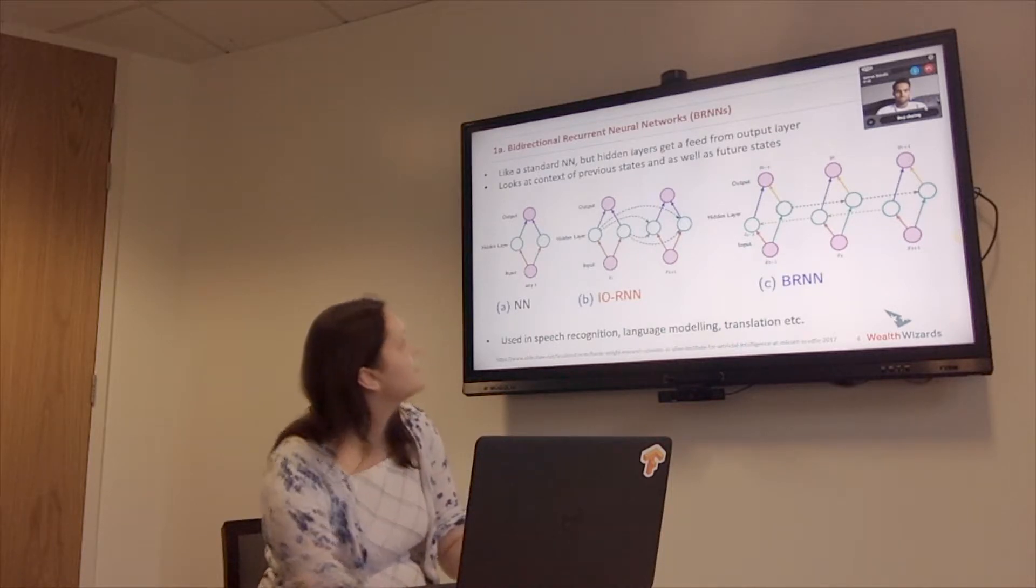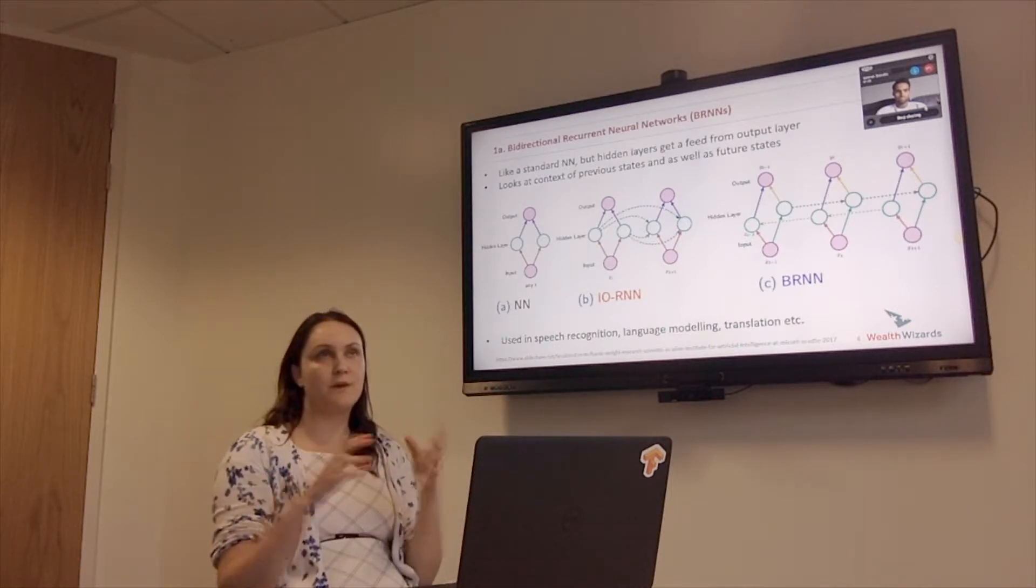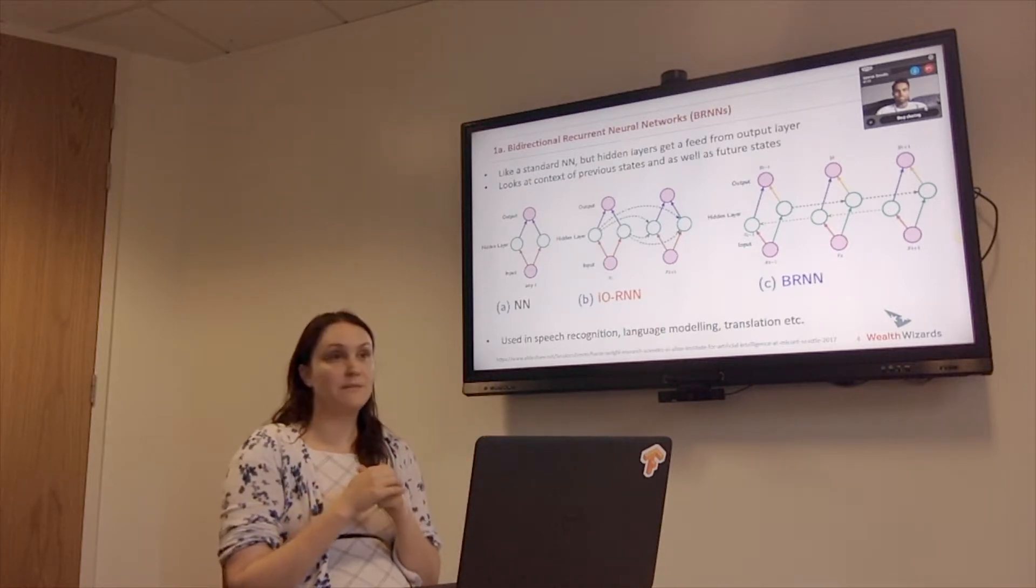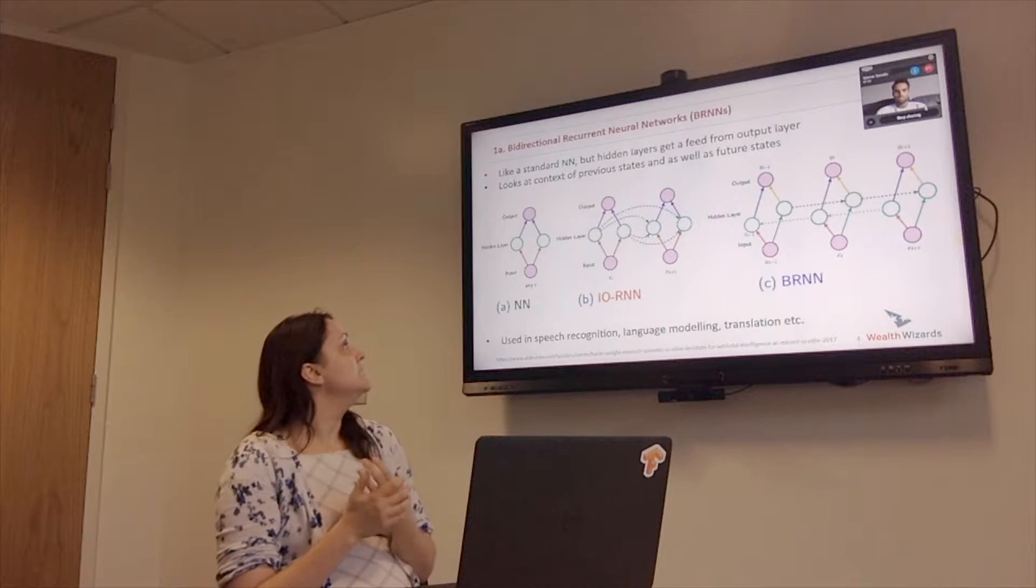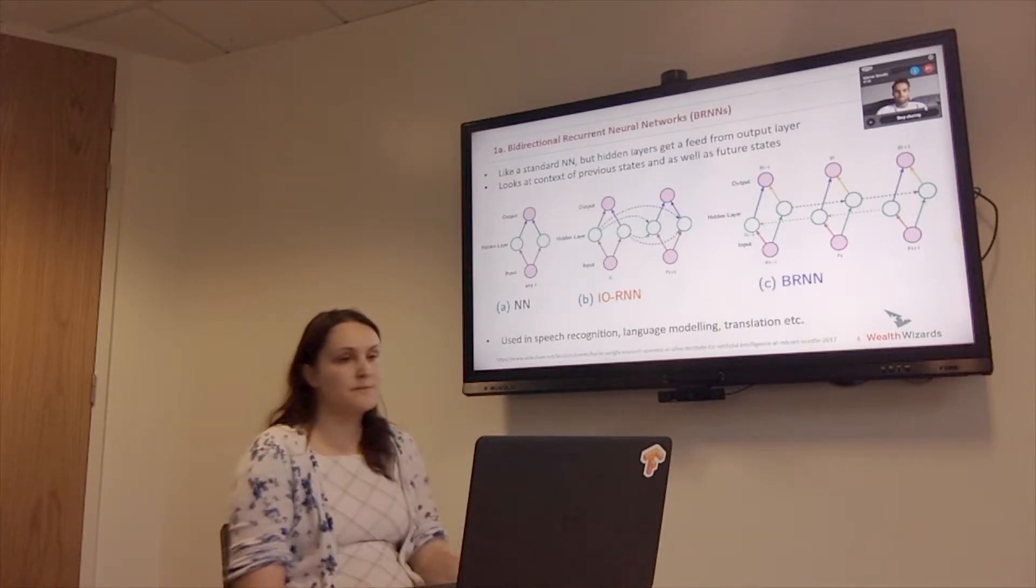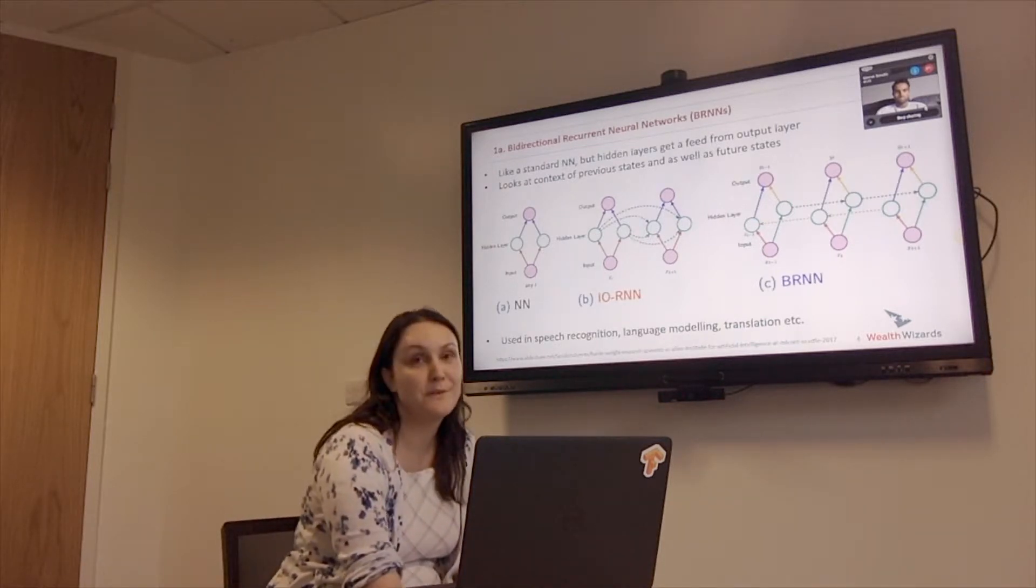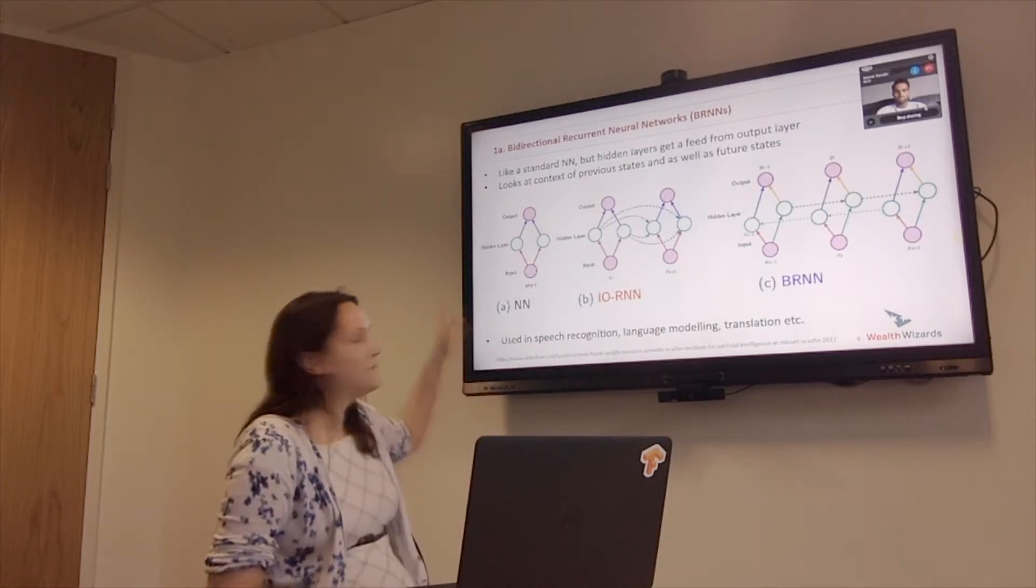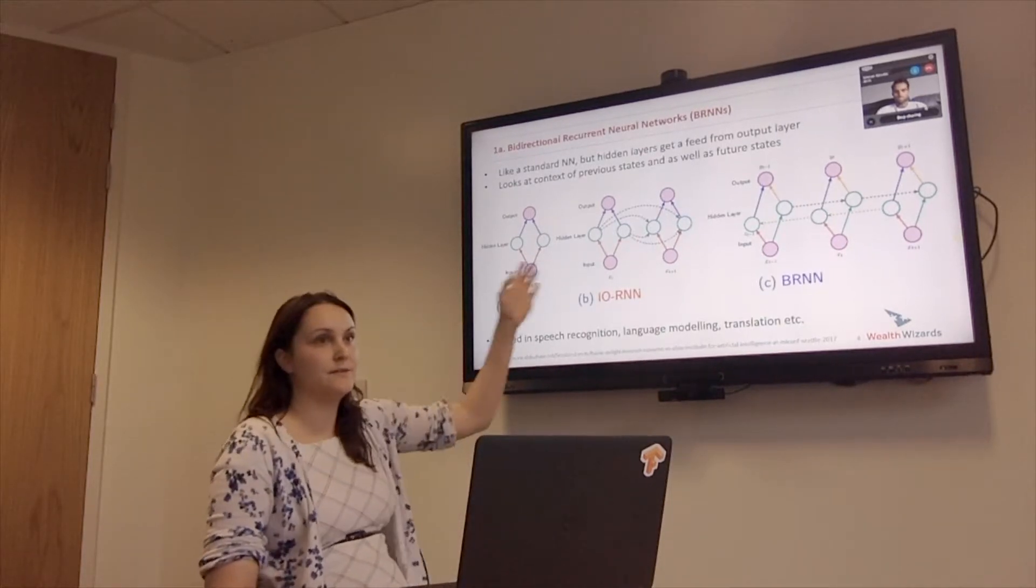So the first thing, the first part of the problem was deriving the meaning from what's being input by the customer. And so they used something called a bidirectional recurrent neural network, which is a bit of a mouthful. But it's just to take you from something that you are familiar with to this concept.